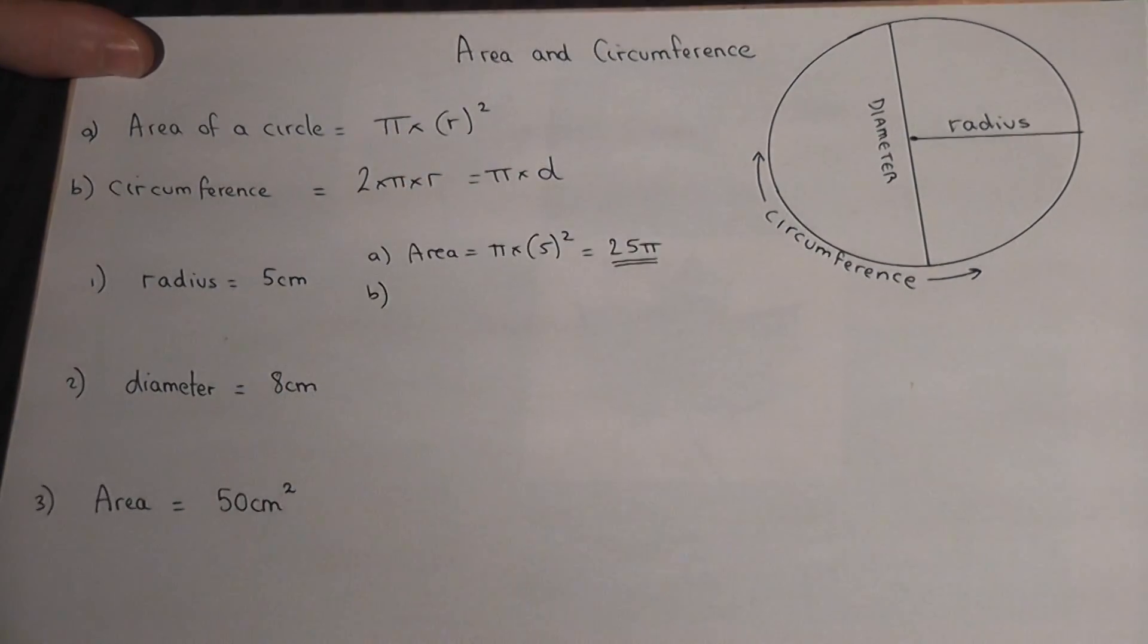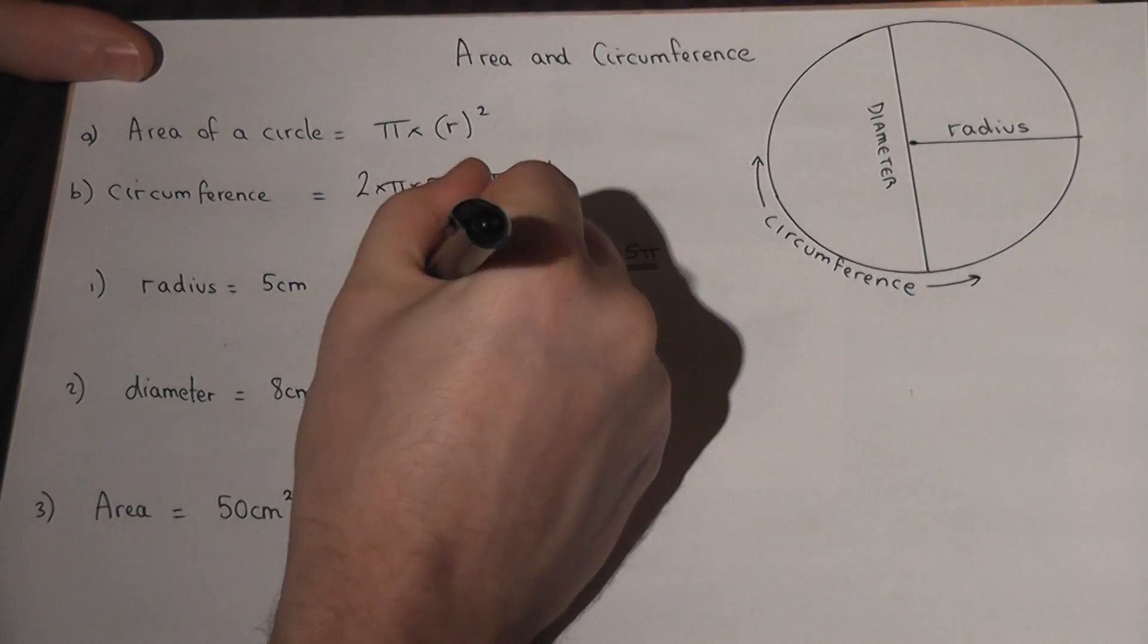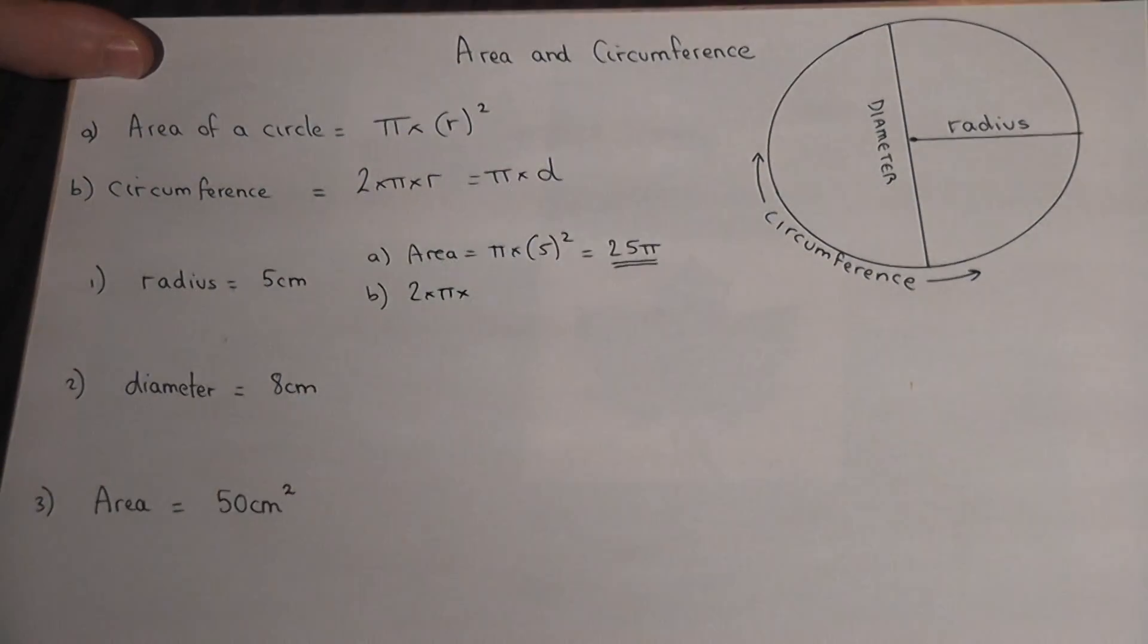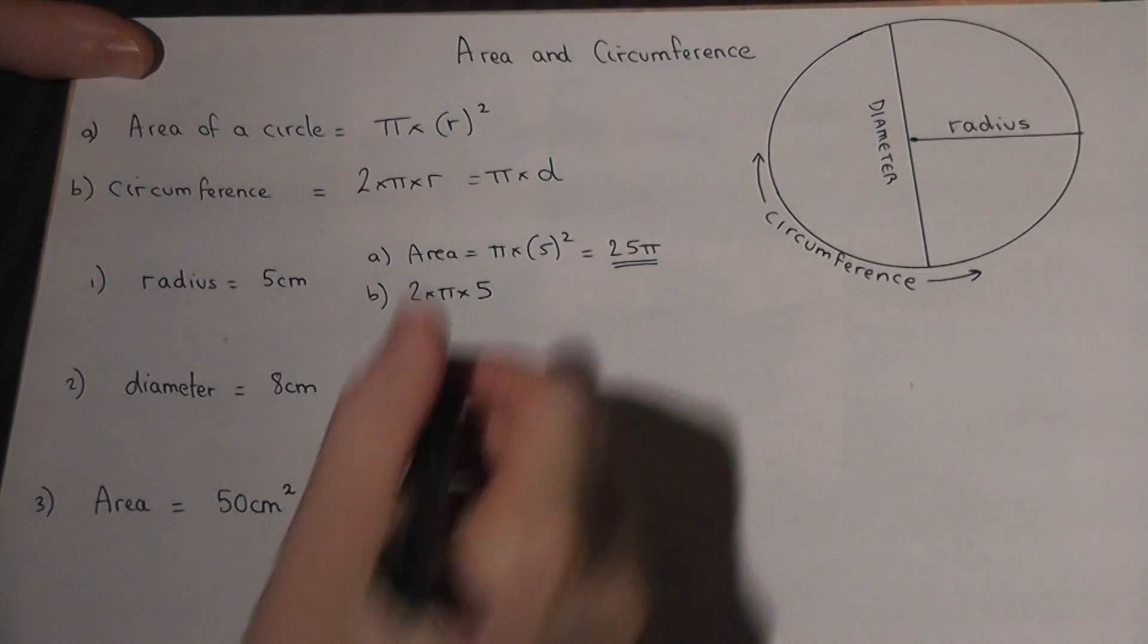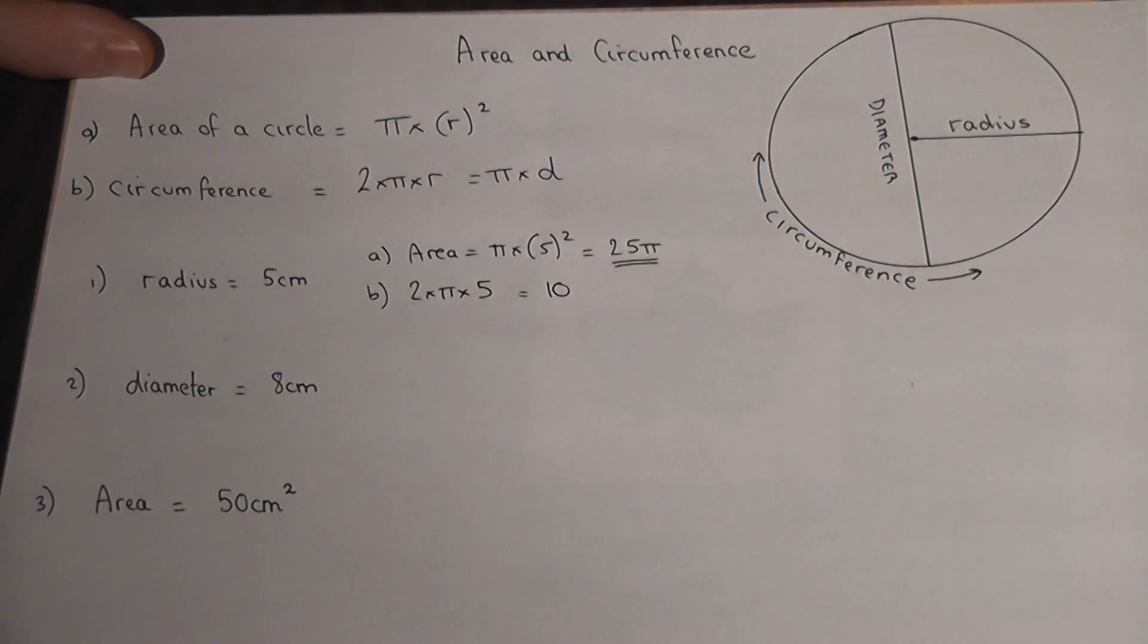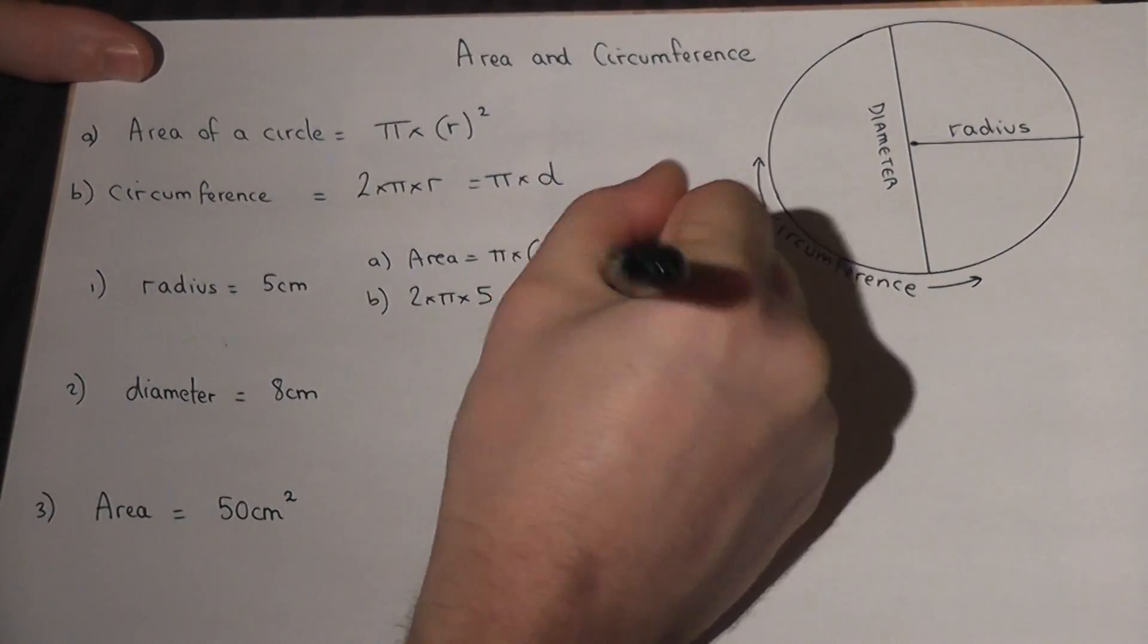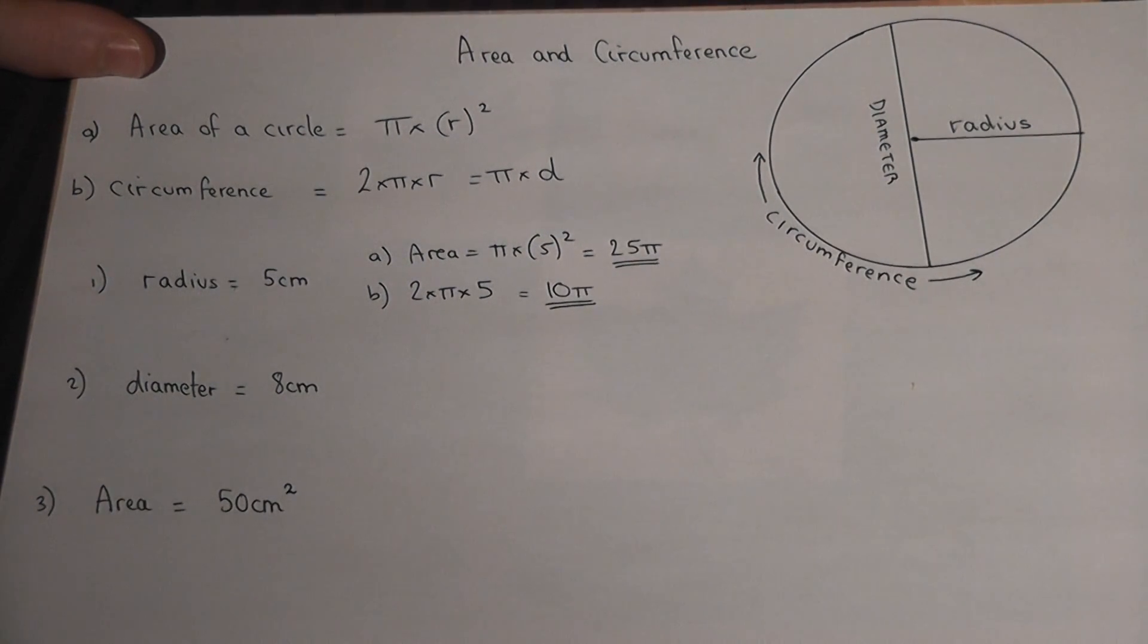If you want the circumference, that's just 2 times π times radius, which is 5. 2 times 5 is 10, so the answer is 10π, which you can work out by doing 10 times π on a calculator.